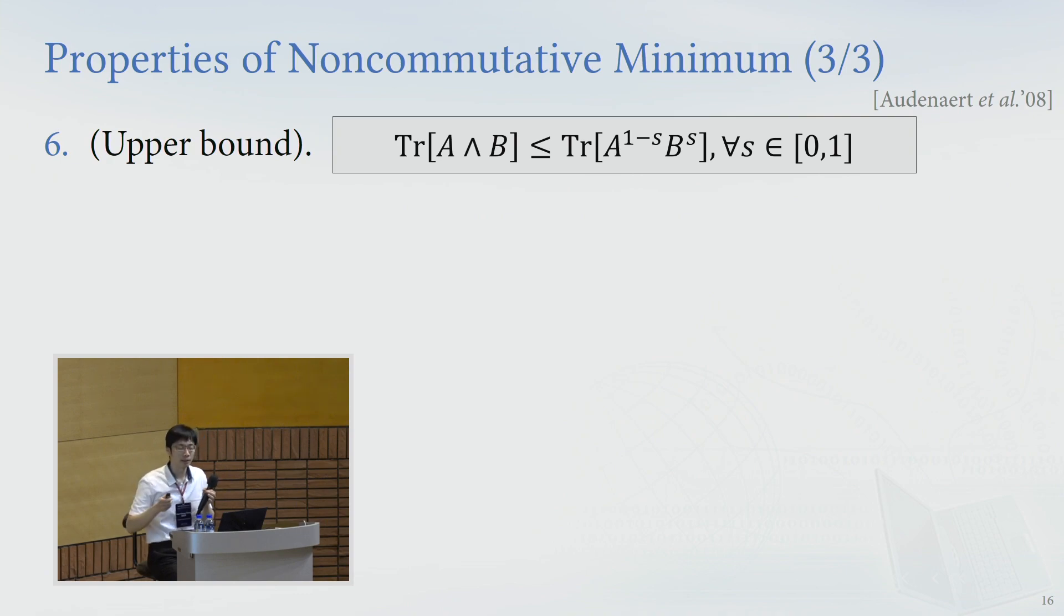However, the quantum Chernoff bound shows that the optimal error can be upper bounded by some multiplicative terms on the right-hand side. So if operator A and Bs are tensor product, N-fold tensor product, then the right-hand side is multiplicative. It means that it will exponentially decay, so this is a very nice result.